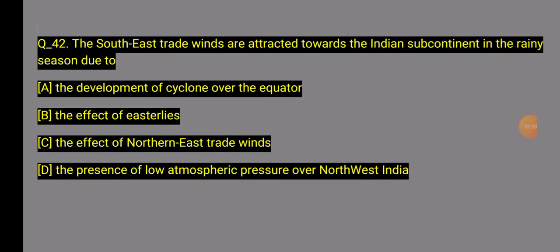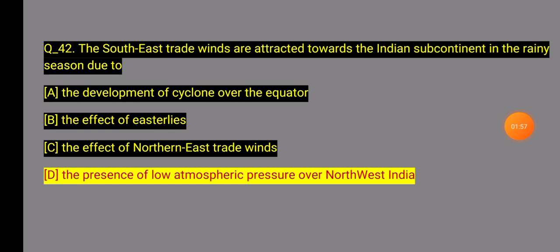Question 42: The southeast trade winds are attracted toward the Indian subcontinent in the rainy season. Option D: The presence of low atmospheric pressure over northwest India causes the southeast trade winds to be attracted toward the subcontinent during the rainy season.